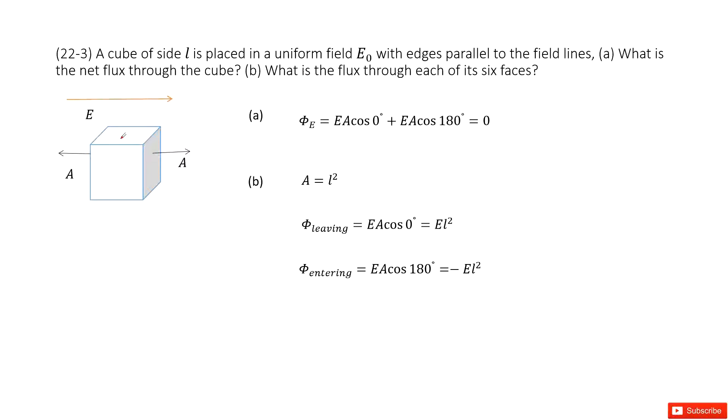We can see we have a cube. The side length is given L. And then it's placed in a uniform field E₀. This E₀ is parallel to the field lines, so it just goes horizontal. We can consider it in this way.